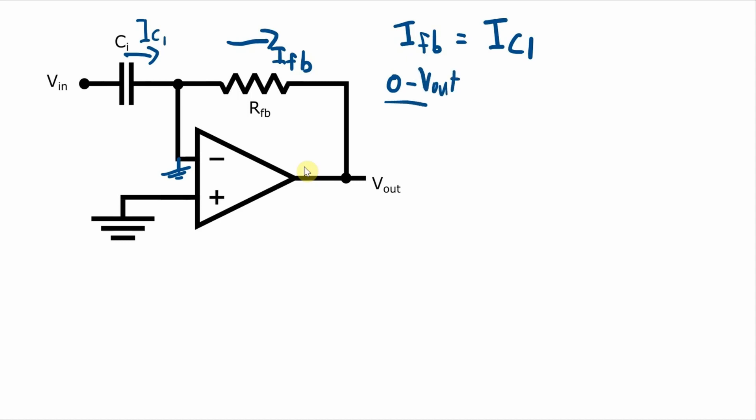Divide that by the feedback resistor value, gives you the feedback current. Now that's equal to the current through the capacitor. Current through a capacitor is equal to the capacitance times the rate of change of the voltage across the capacitance.